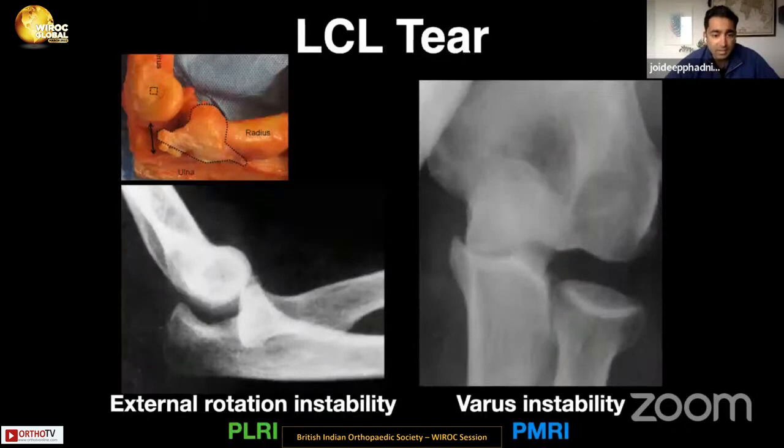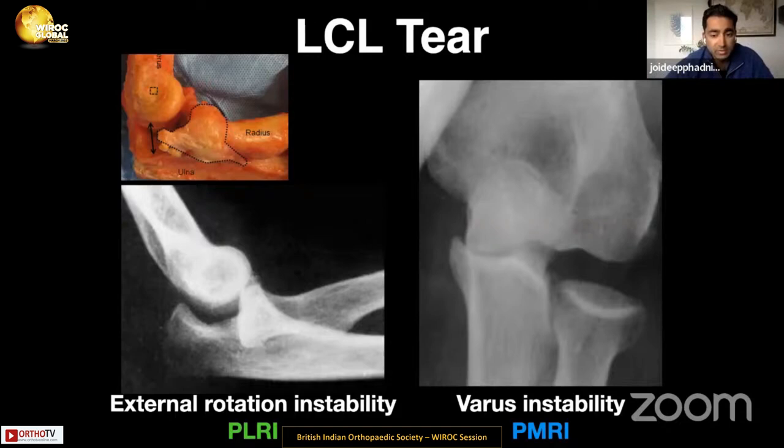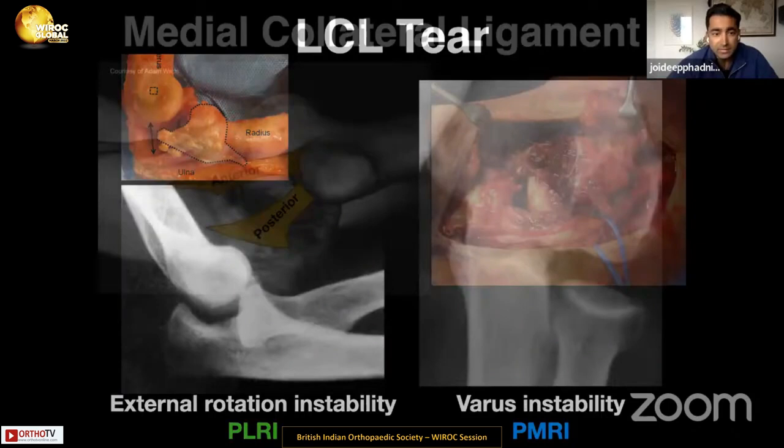The lateral collateral ligament is injured in both posterolateral and posteromedial patterns and needs repair in both. In the posterolateral pattern, it causes external rotation instability — a drop sign — where on the lateral view the ulna rotates away from the humerus due to detensioning of the lateral collateral ligament. In the posteromedial pattern, we get varus instability with a sleeve avulsion of the lateral ligament causing coronal plane instability.